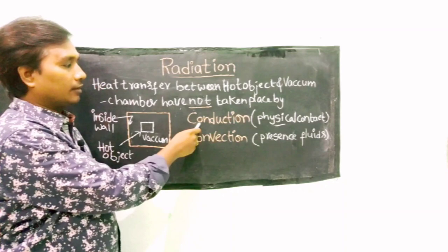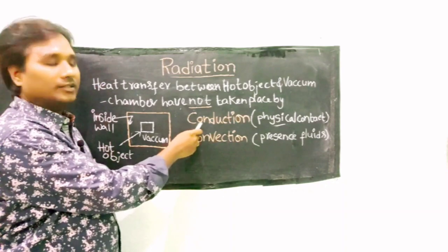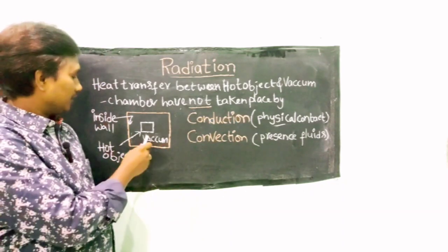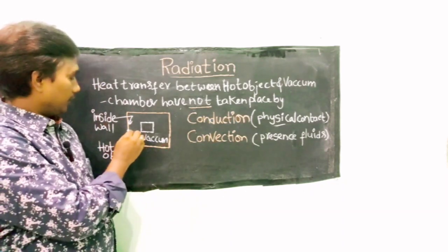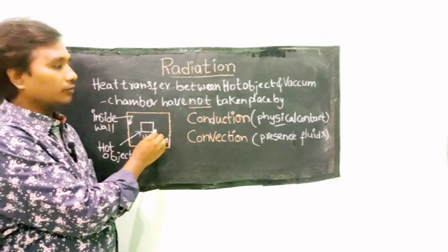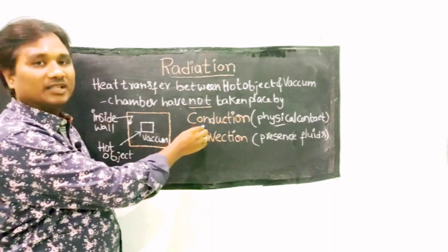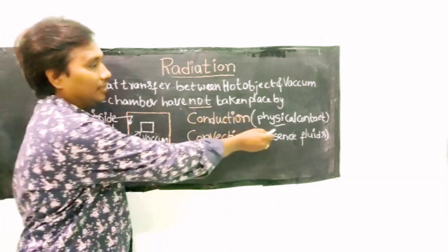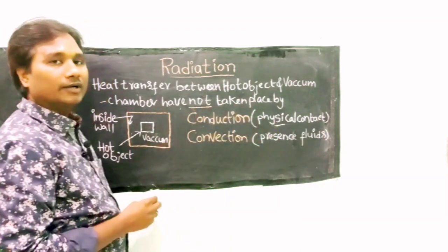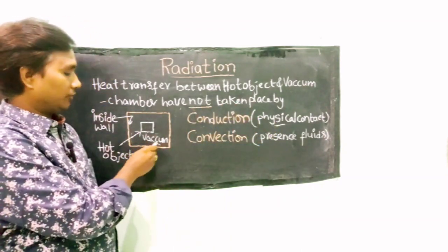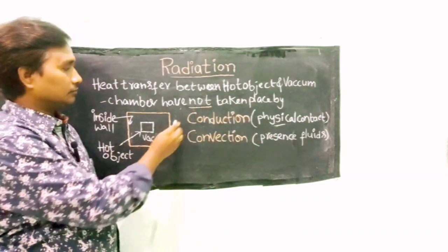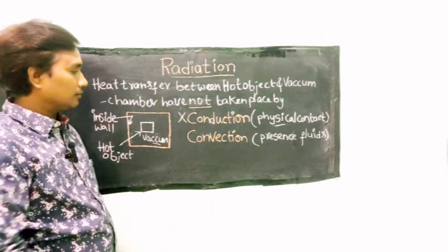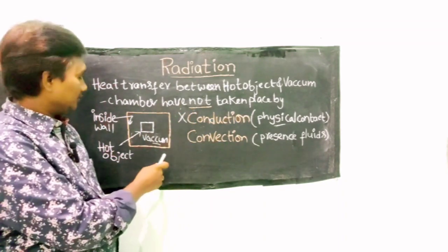Heat transfer between the hot object and vacuum chamber has not taken place by conduction, nor by convection. For conduction to take place, there must be physical contact, but there is no physical contact — only vacuum — so there is no conduction heat transfer.